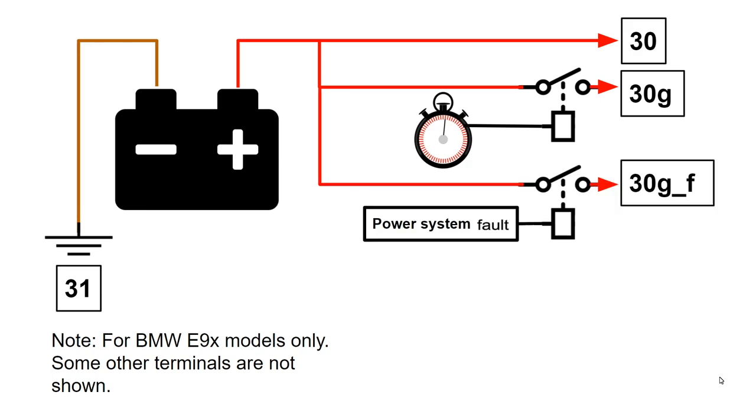Terminal 30GF is always on until there's a fault in the system. For example, the battery is running low, so the power management system must switch off certain devices to save electricity.